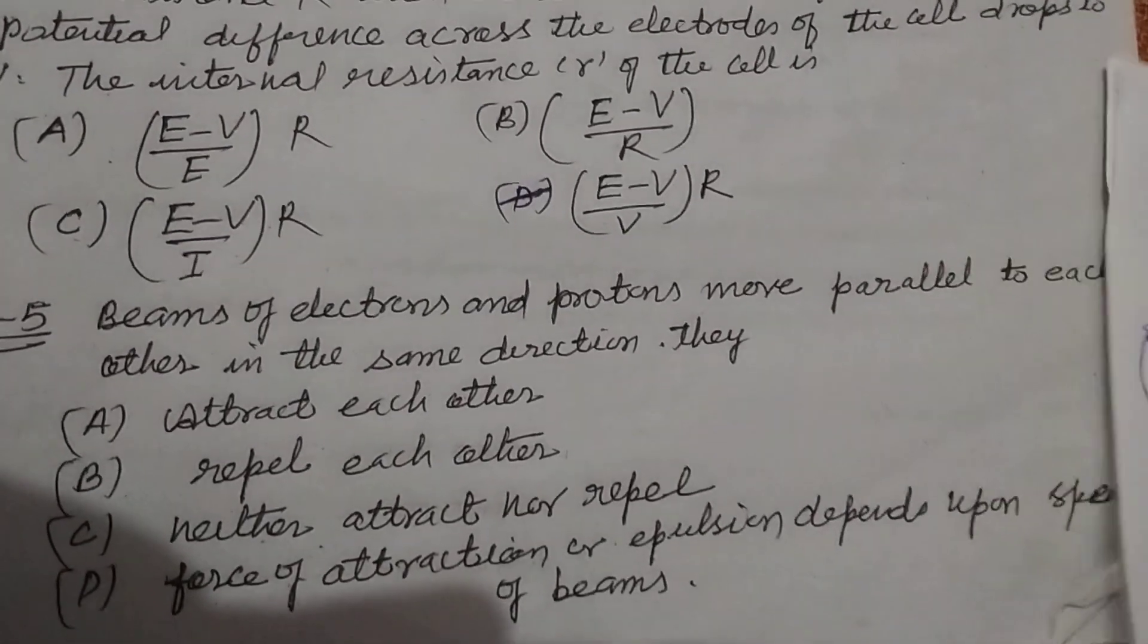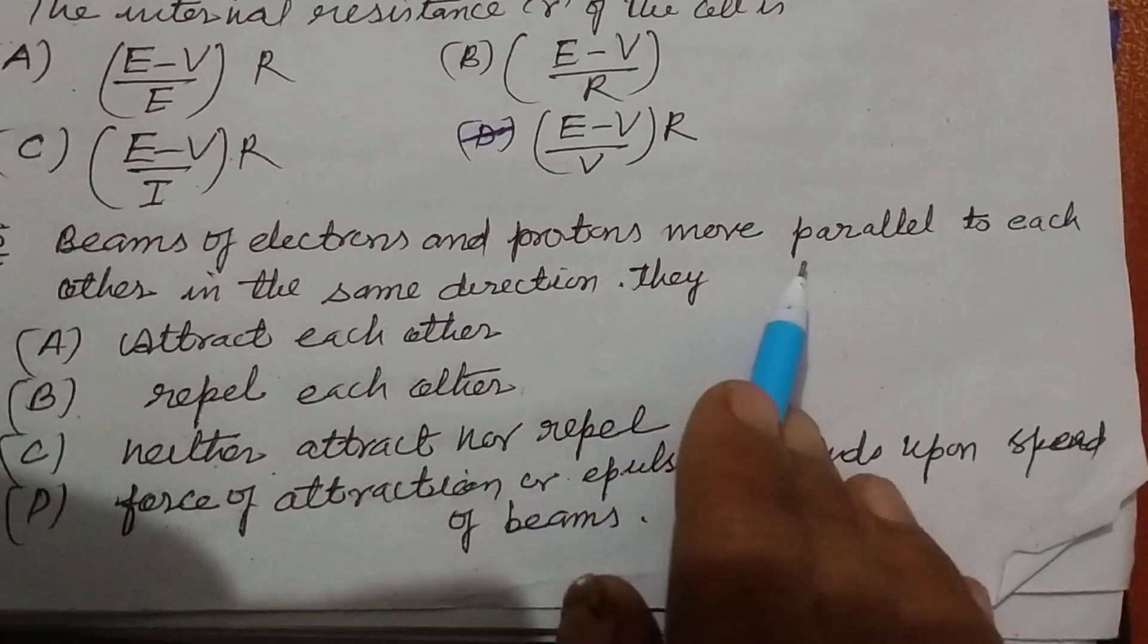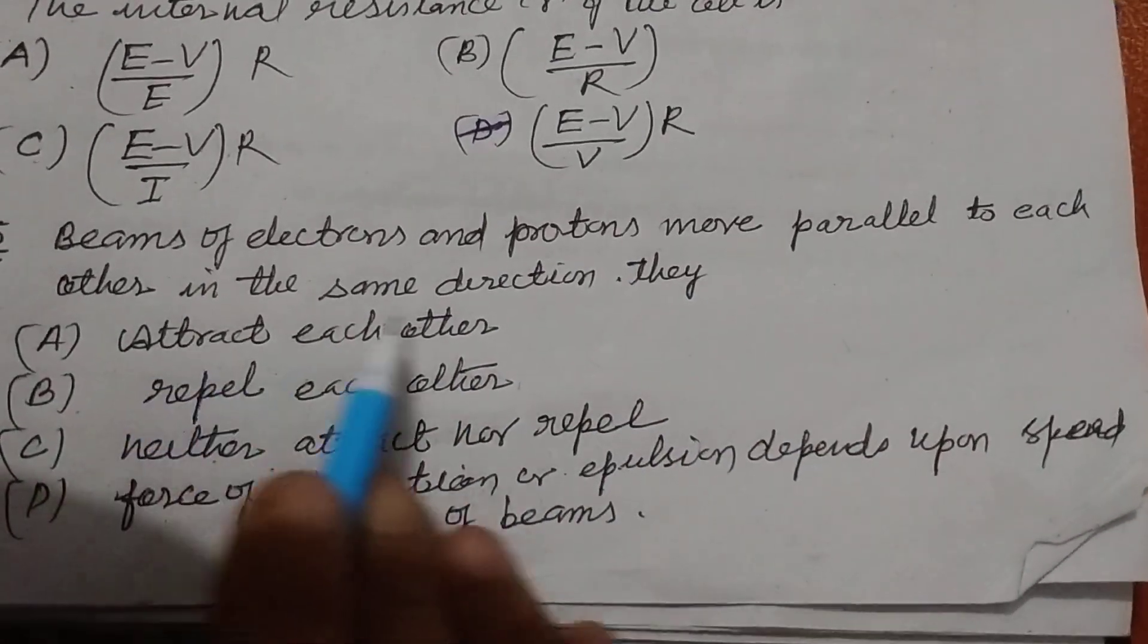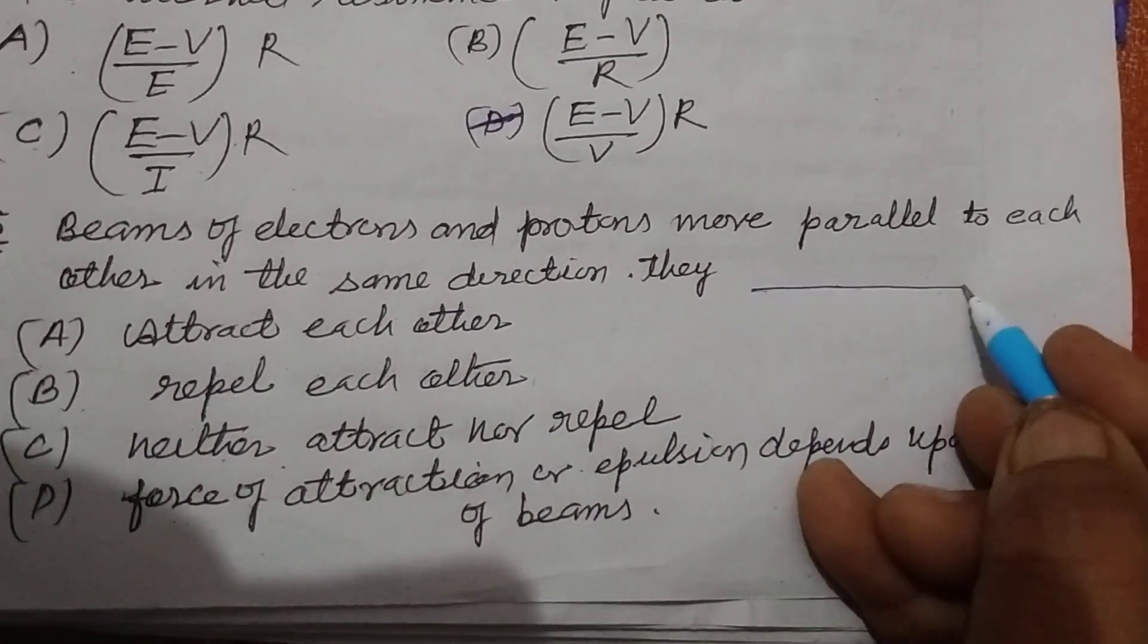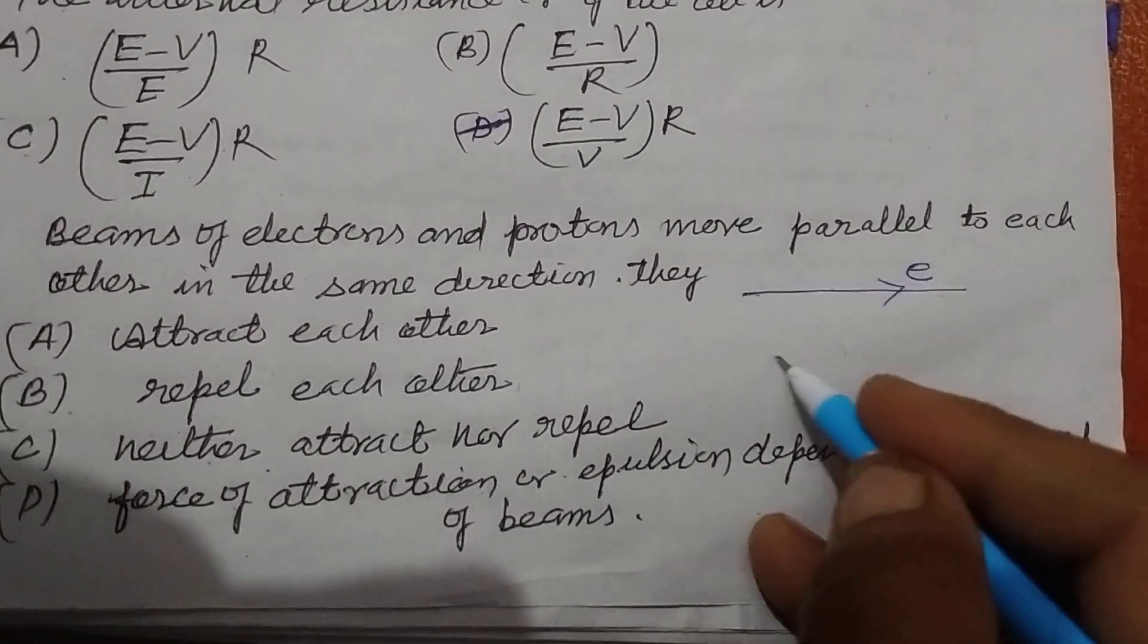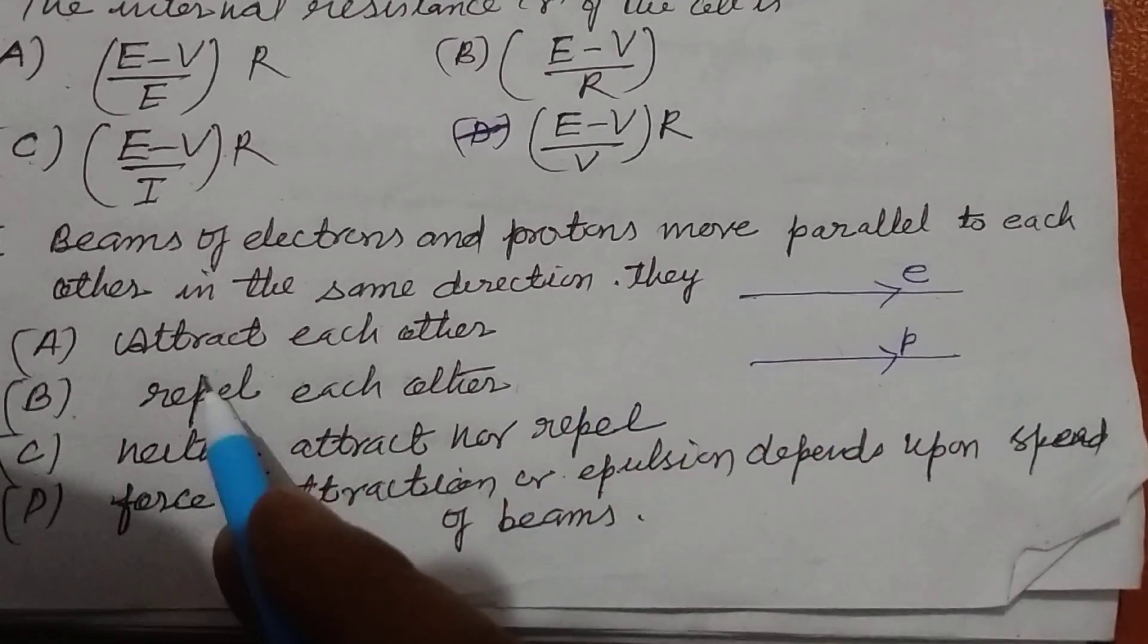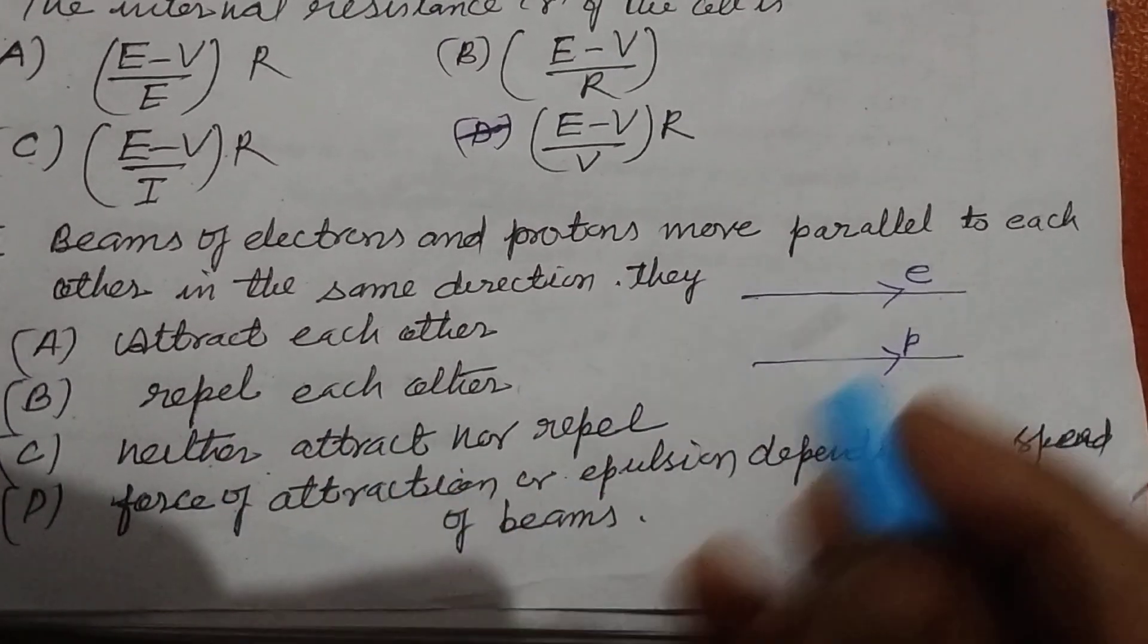Now the next question is: beams of electrons and protons move parallel to each other in the same direction. So this is electron moving in this direction and proton also moving in this direction, parallel direction. They attract each other or repel each other?